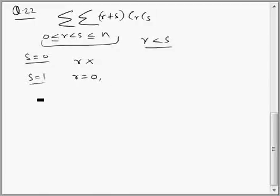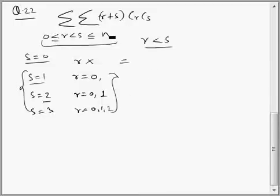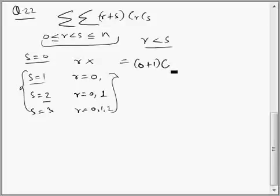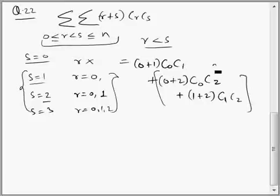Just to understand this: when s is 0, r is not possible; when s is 1, r is 0; when s is 2, r is 0 or 1; when s is 3, r equals 0, 1, or 2. So when s is 1 and r is 0 the term is (0+1)·C0·C1; when s is 2 and r is 0 it gives (0+2)·C0·C2, and when r is 1 it gives (1+2)·C1·C2. This continues for higher values of s.